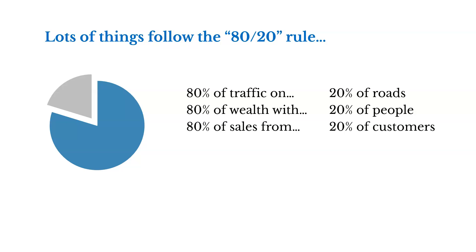So 80% of traffic tends to be on 20% of roads — there's a small percentage of roads where most of the traffic exists. And 80% of wealth is in the hands of 20% of people. And 80% of sales come from 20% of our customers. Given all the revenue our company may generate on an annual basis, most of that comes from a small subset of our customers.